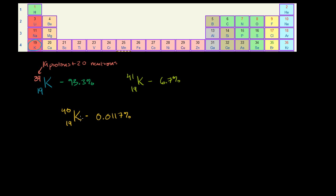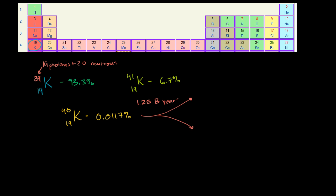What's really interesting about potassium-40 is that it has a half-life of 1.25 billion years. The good thing about that, as opposed to something like carbon-14, is that it can be used to date really, really old things. Every 1.25 billion years — that's its half-life.